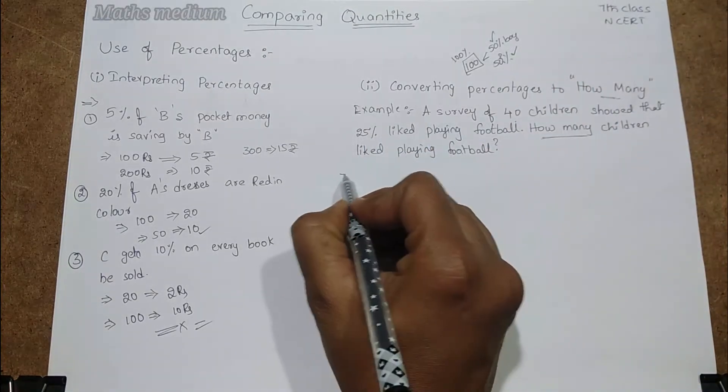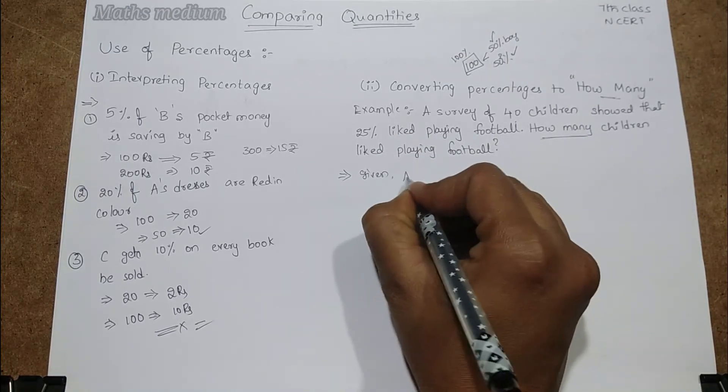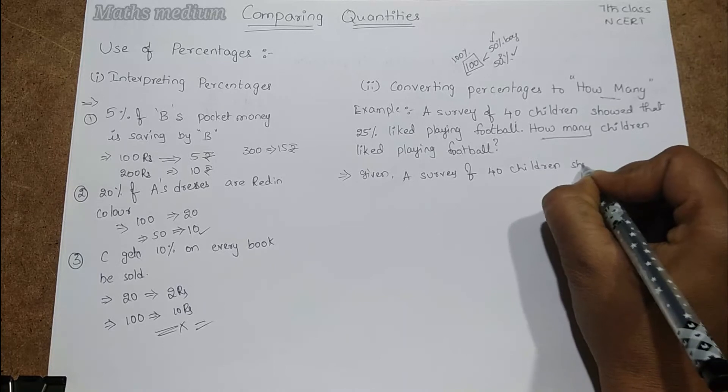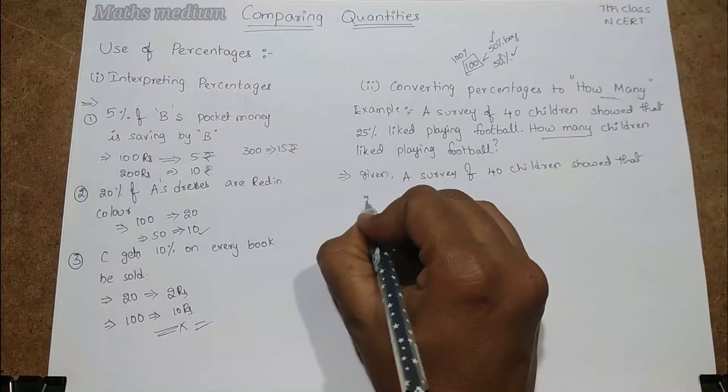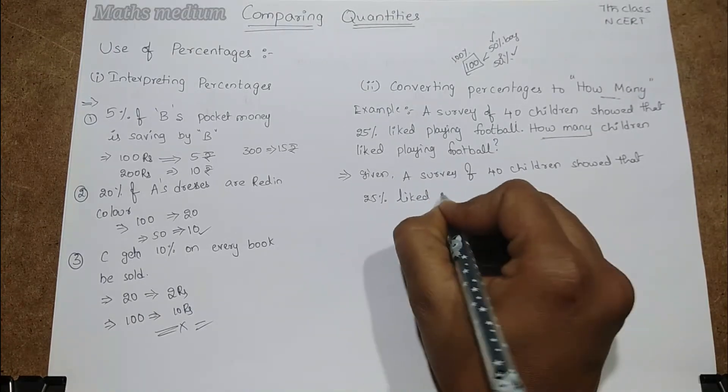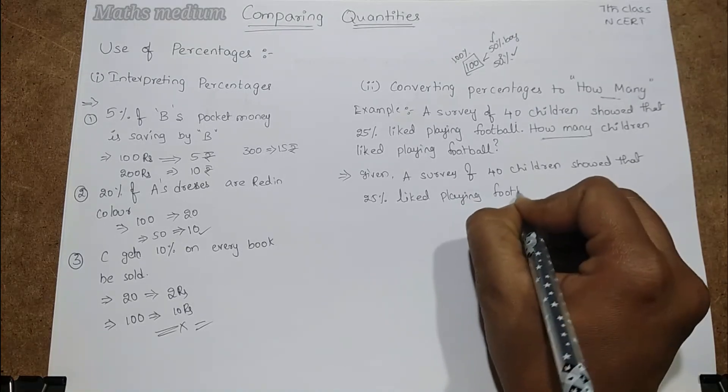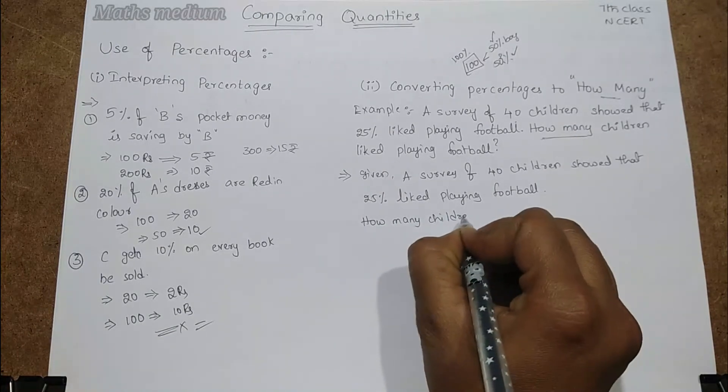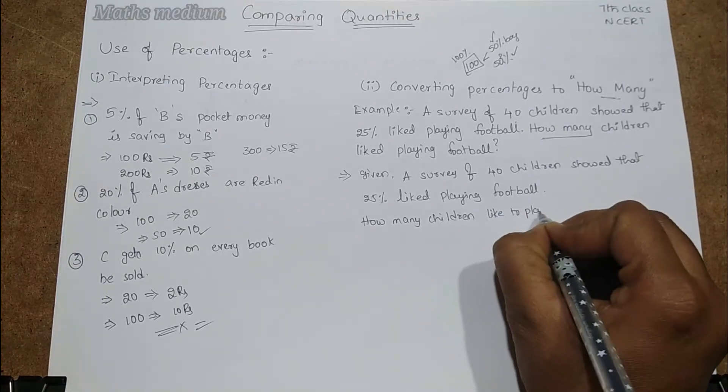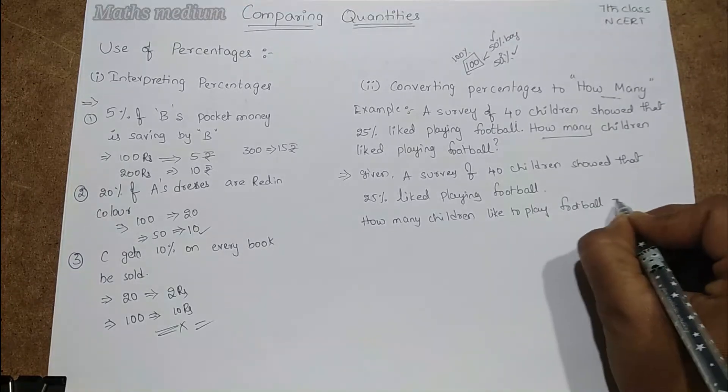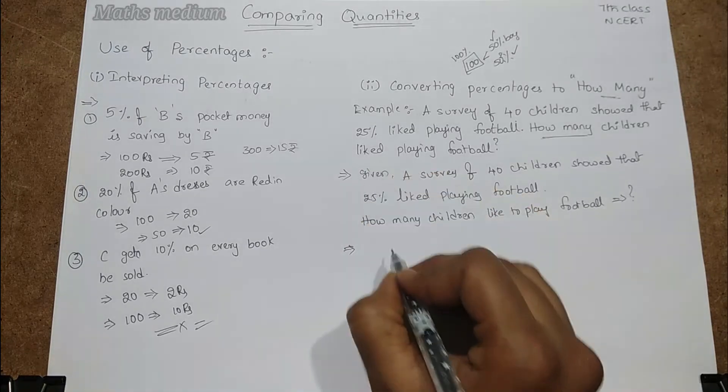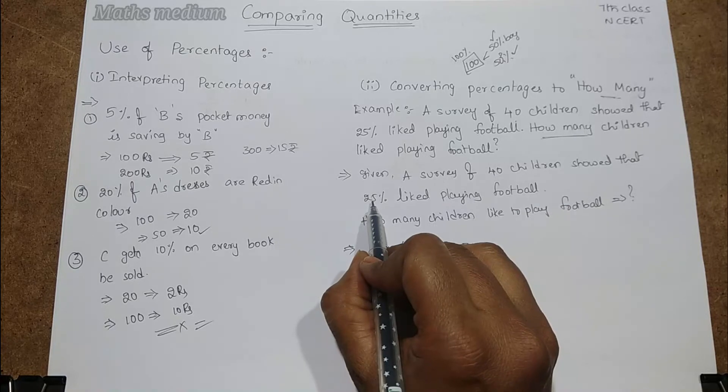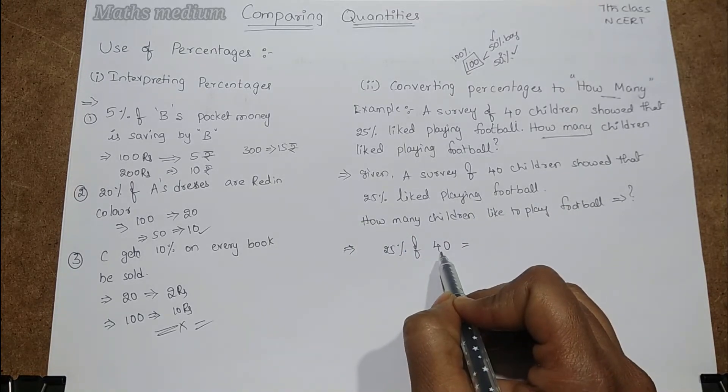That is the main thing in that question. Let's start here. Given a survey of 40 children showed that 25% like playing football, right? We have to find how many children like to play football. This is what we have to find. Now let's start. 25% of 40. We can write it as like this. Why? Because here 40 children are there. Out of 40 there are 25% are like to play football. That's why I am writing like this.